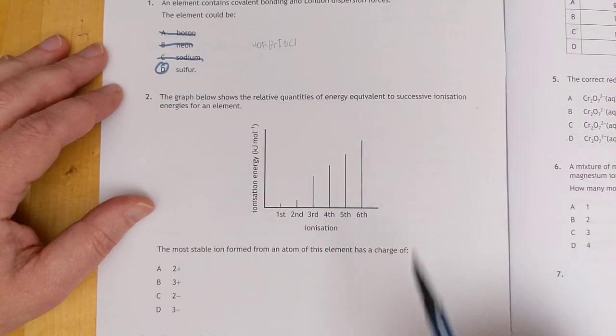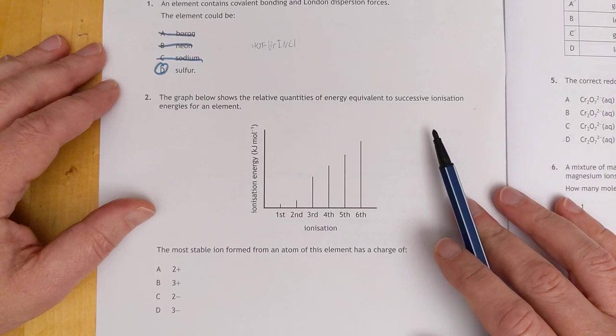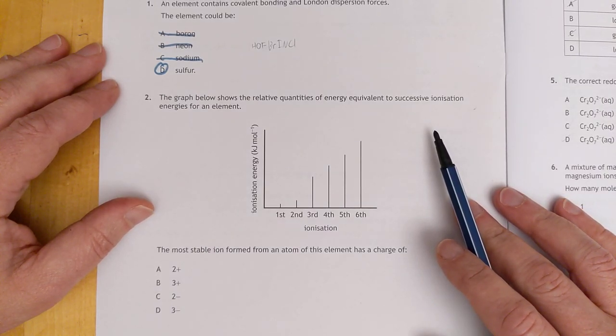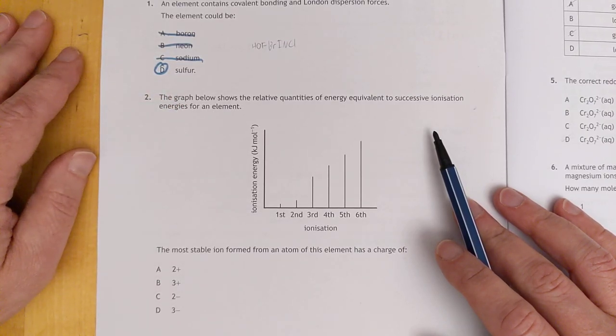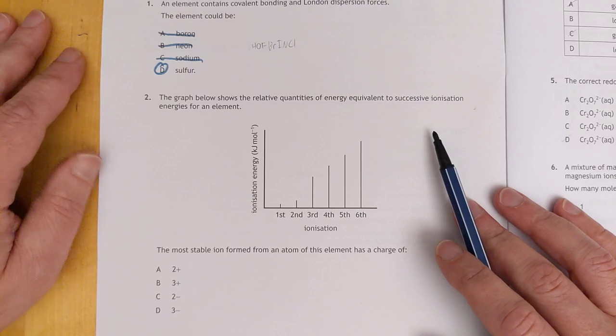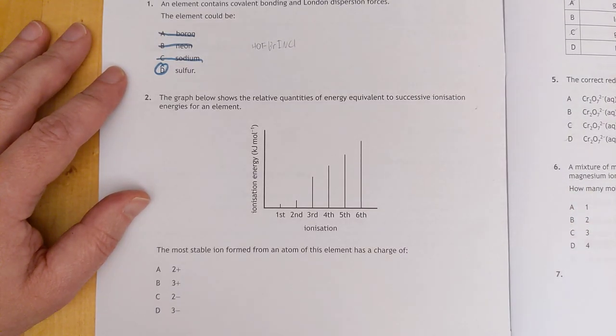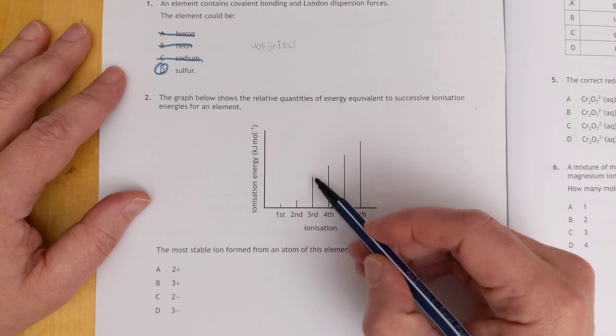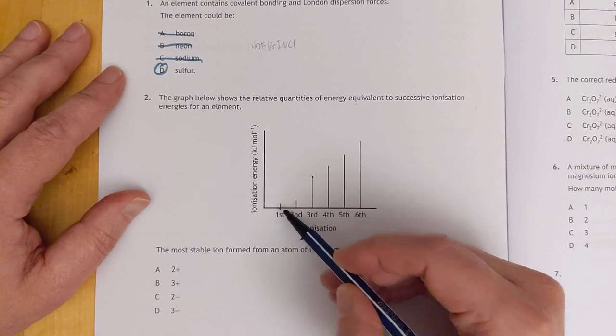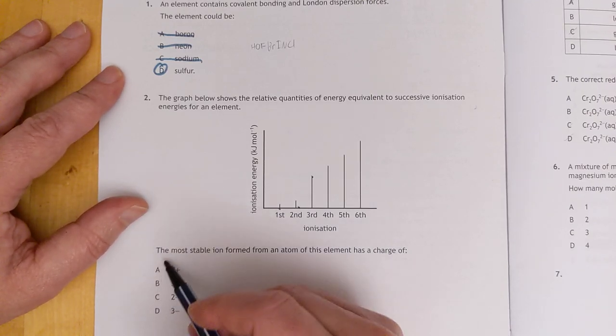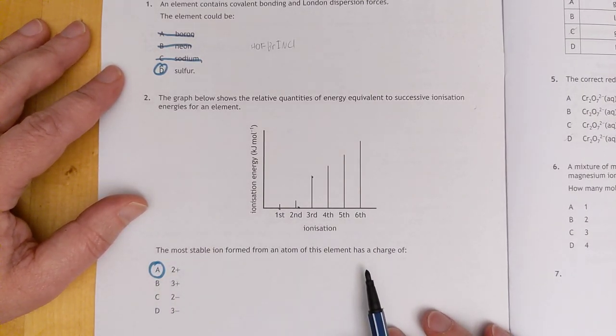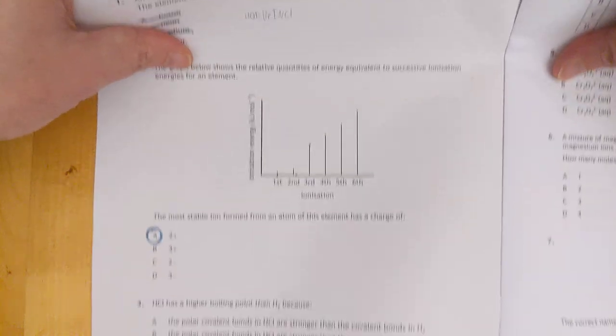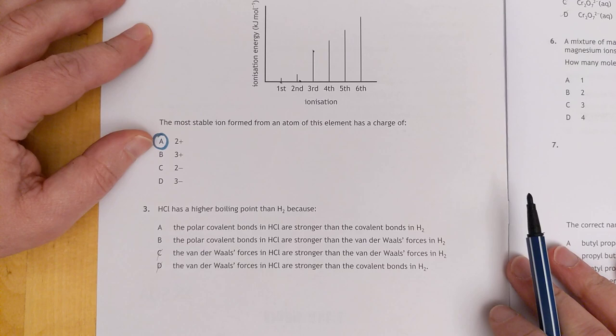Number two. The graph below shows the relative quantities of energy equivalent to successive ionization energy for an element. Why did you phrase it like that? We see the first two are low, and there's a big jump to the third one. That implies that you're cutting into the next layer of electrons here. So there are one, two electrons in the outer layer, which means the most stable charge it would form is a two-plus ion.